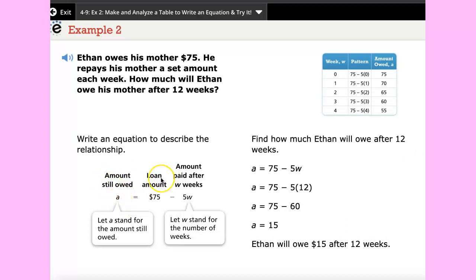Also we could create an equation to solve this problem if we don't want to do a table. Amount owed which we could represent as a, and then the amount is 75 dollars, and then how much Ethan pays every week, five dollars every week. So w stands for the number of weeks. To substitute the value we could do this: 75 minus 5 times 12, and that's going to be 75 minus 60, so a equals 15.